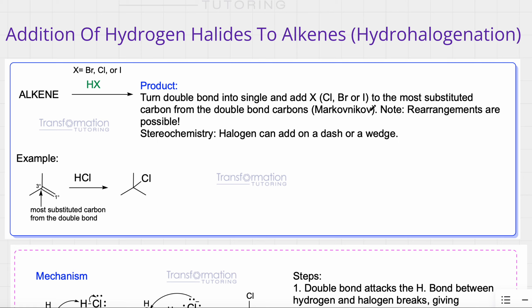We have to note that rearrangements are possible, and I will go through them later in the lesson. For stereochemistry, your halogen can add on a dash or on a wedge.